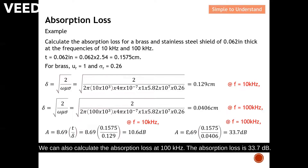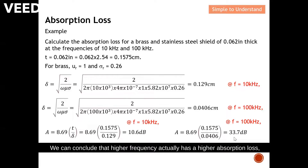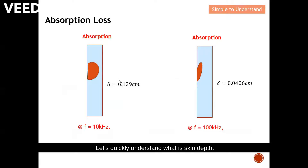We also calculate the absorption loss at 100 kHz, which is 33.7 dB. We can conclude that higher frequency produces a higher absorption loss, which means better shielding effectiveness.